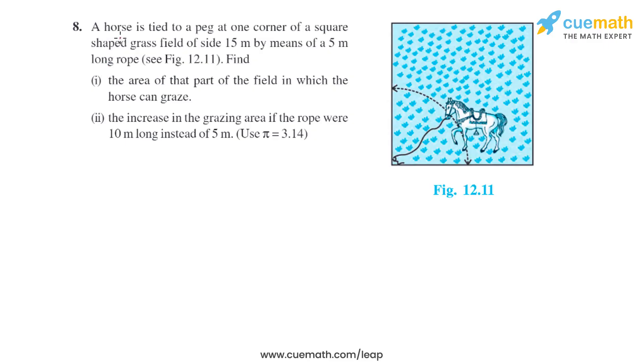Question 8 of this exercise says a horse is tied to a peg at one corner of a square-shaped grass field of side 15 meters by means of a 5 meter long rope. Find the area of that part of the field in which the horse can graze.